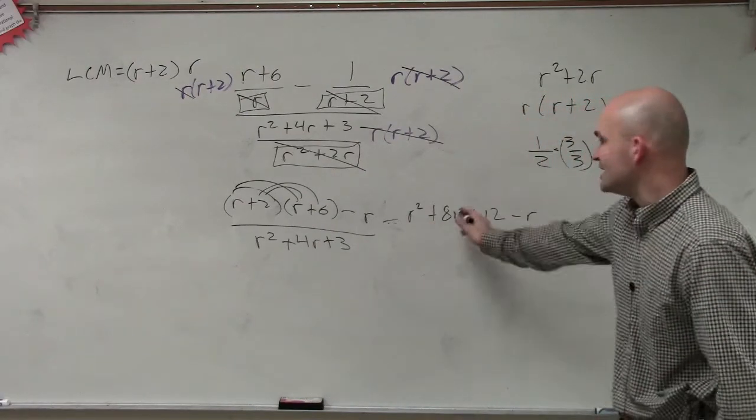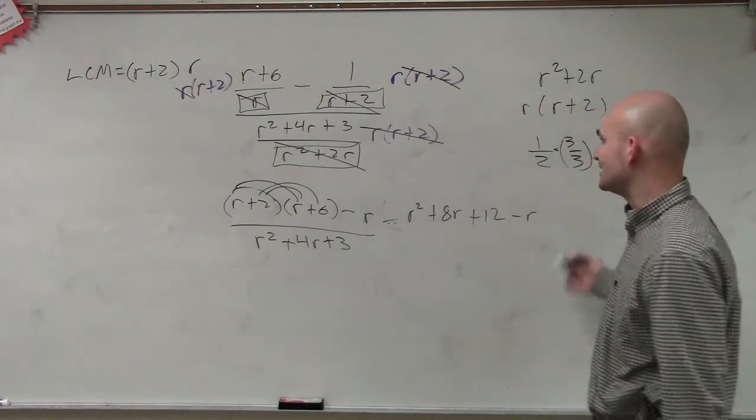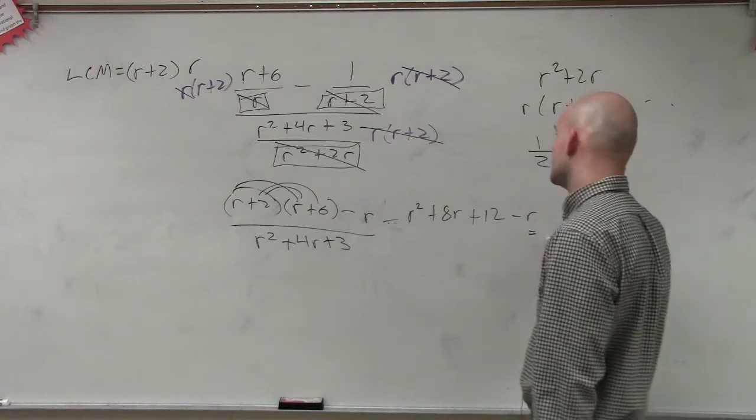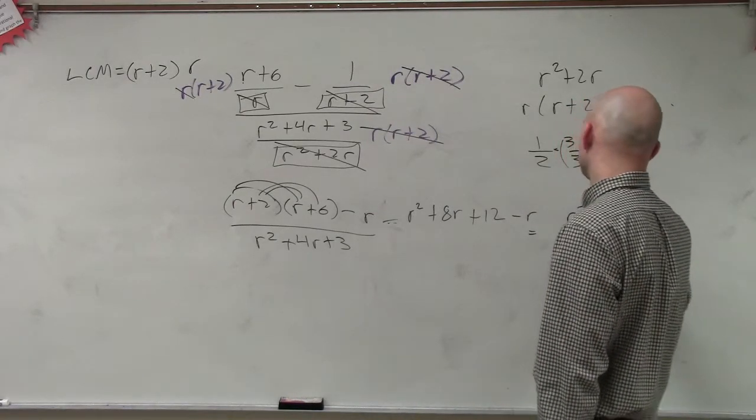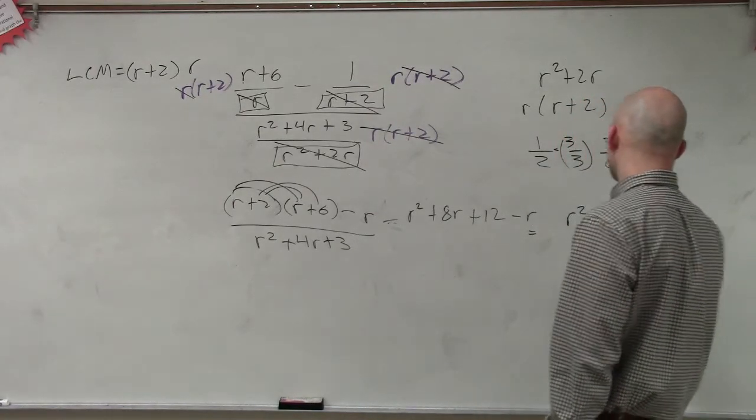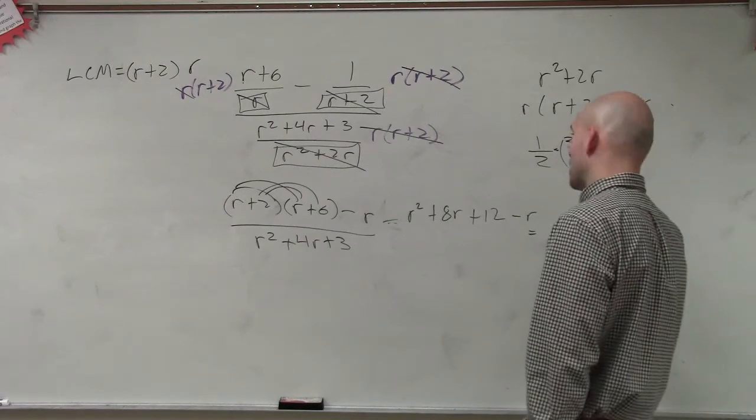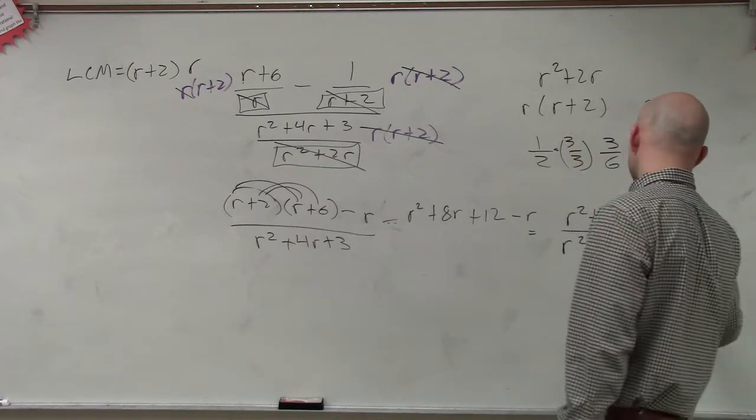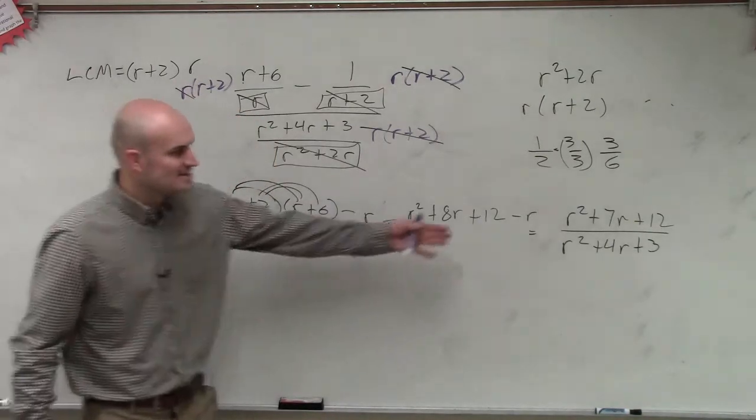So now we multiply this out and we get r squared plus 8r plus 12 minus r, which now 8r minus r is going to give you 7r. So therefore, I have r squared plus 7r plus 12 divided by r squared plus 4r plus 3.